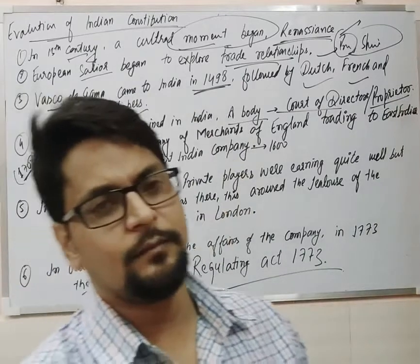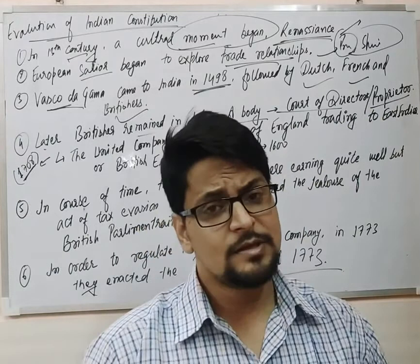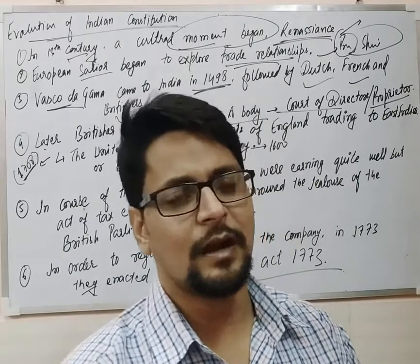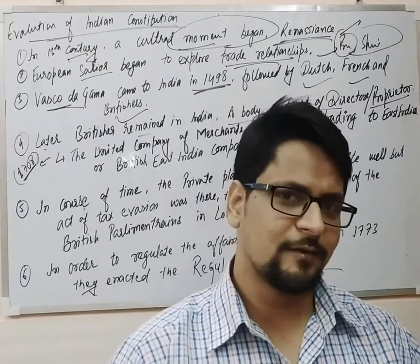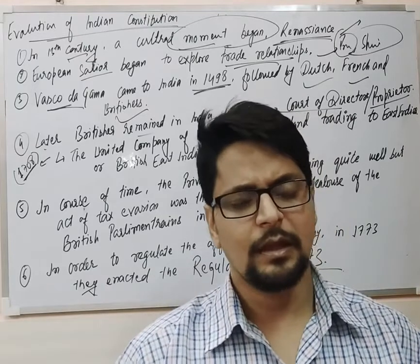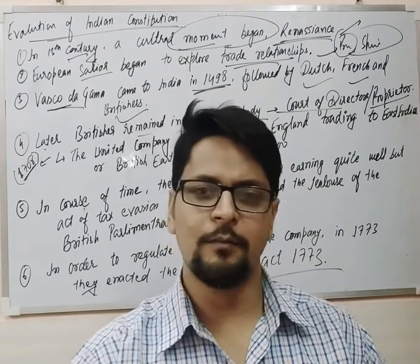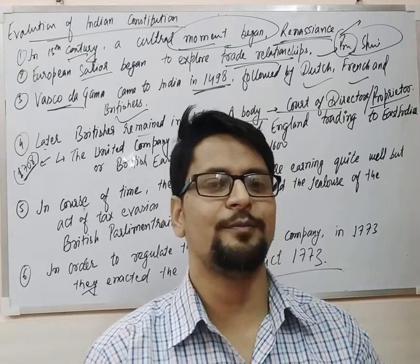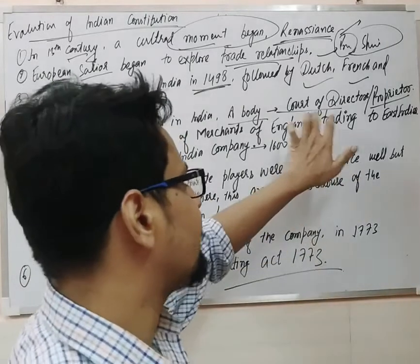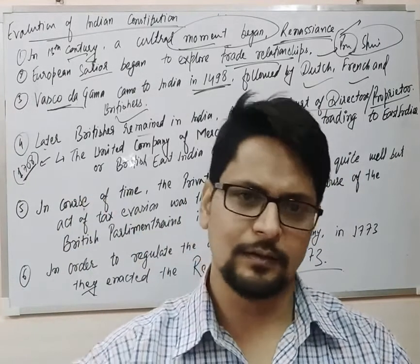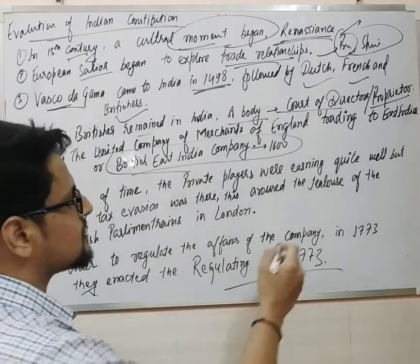In some examinations, an examiner may ask you the meaning of Court of Proprietors. Court of Director and Court of Proprietor are the same thing. Simply, it means that under the concept of British India Crown — that was under Queen Elizabeth at that time — under her supervision, they created a body of private players. That body of private players was named as the Court of Directors. It was simply a private player body there in India for trade and commercial purposes.